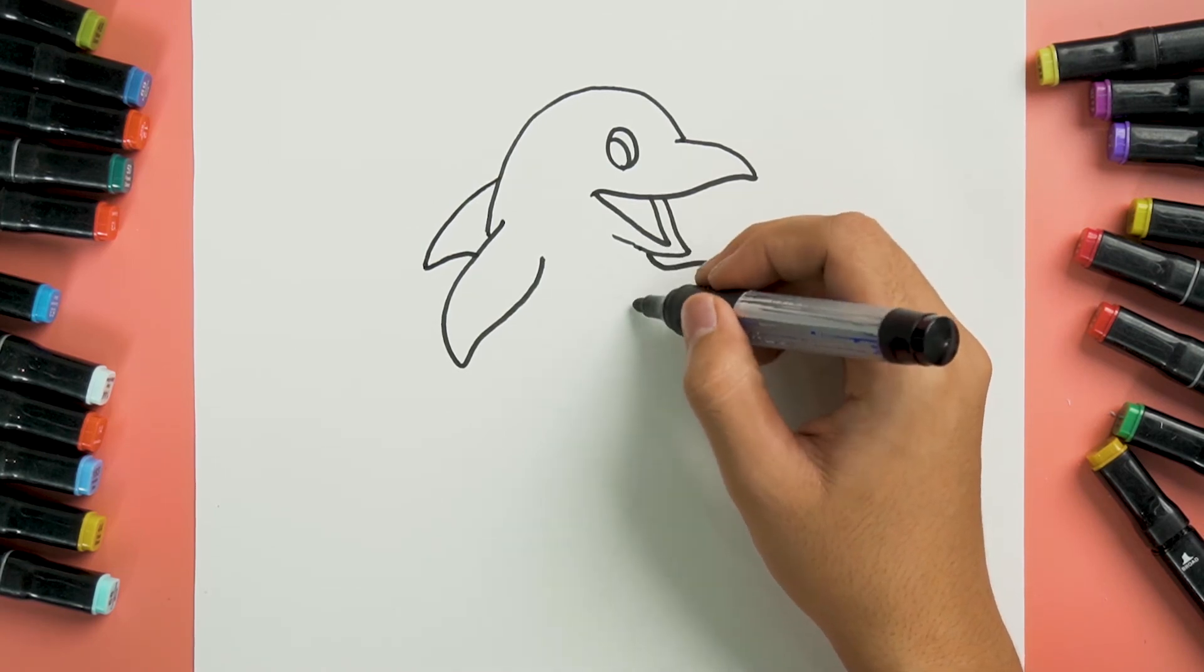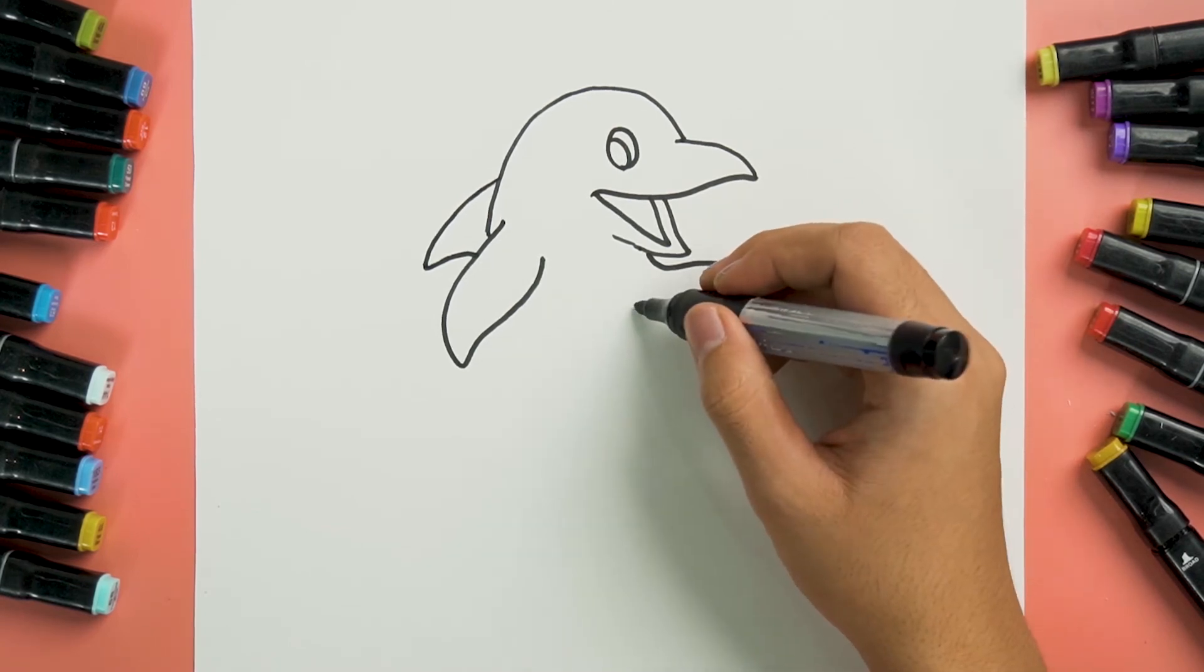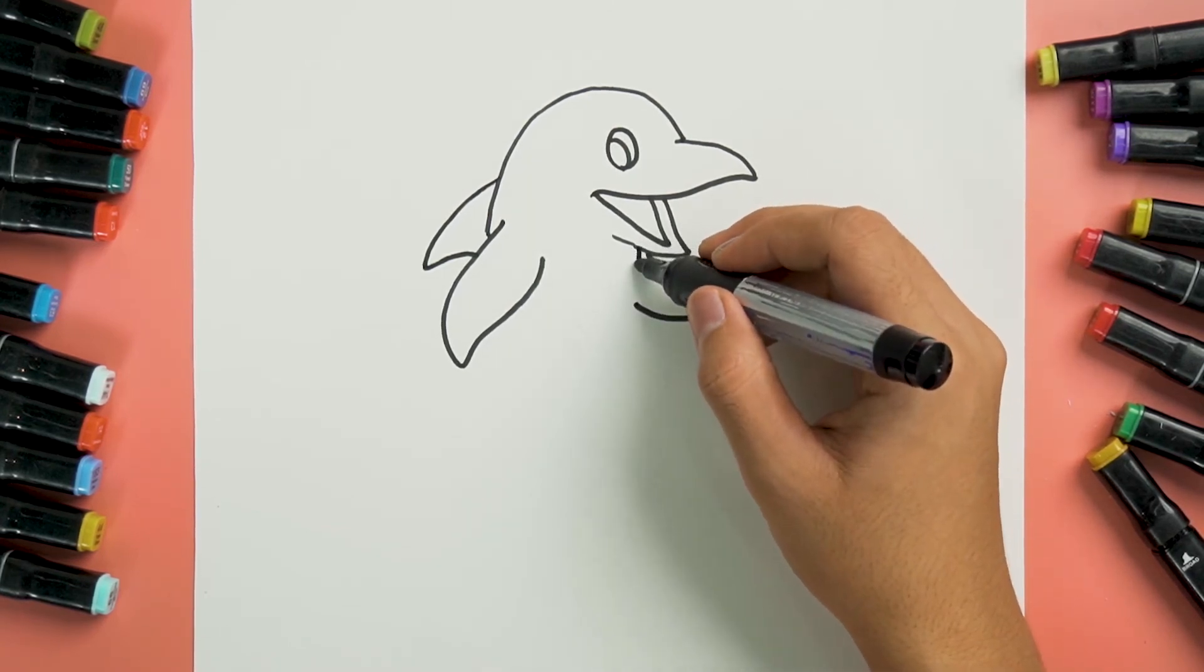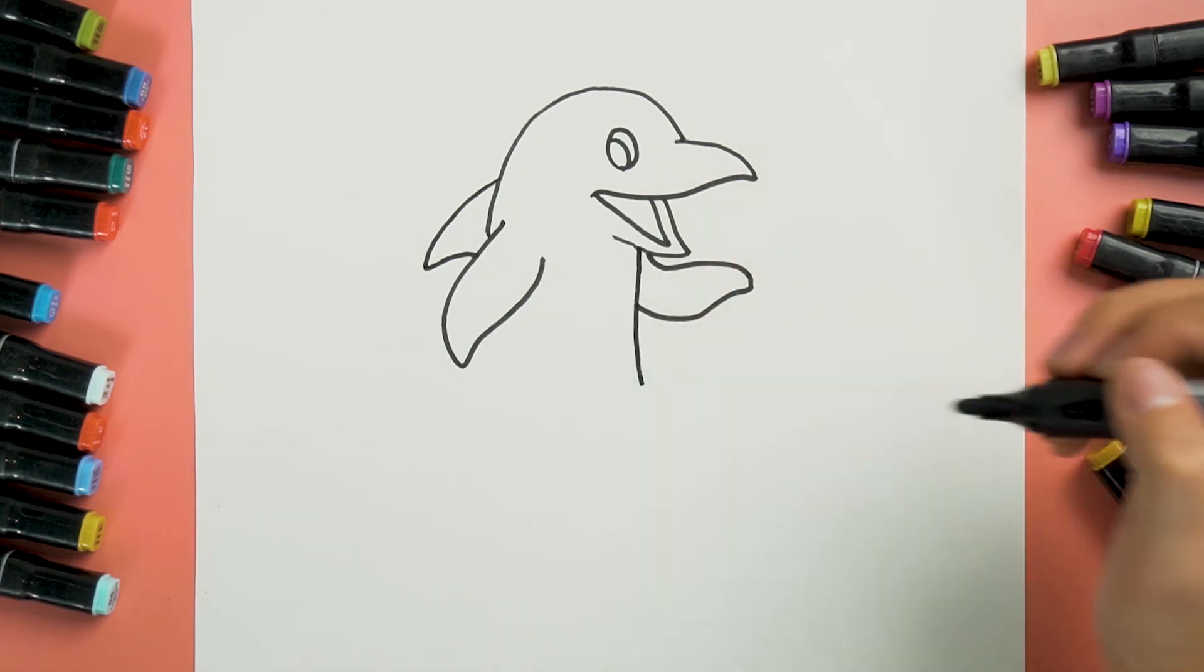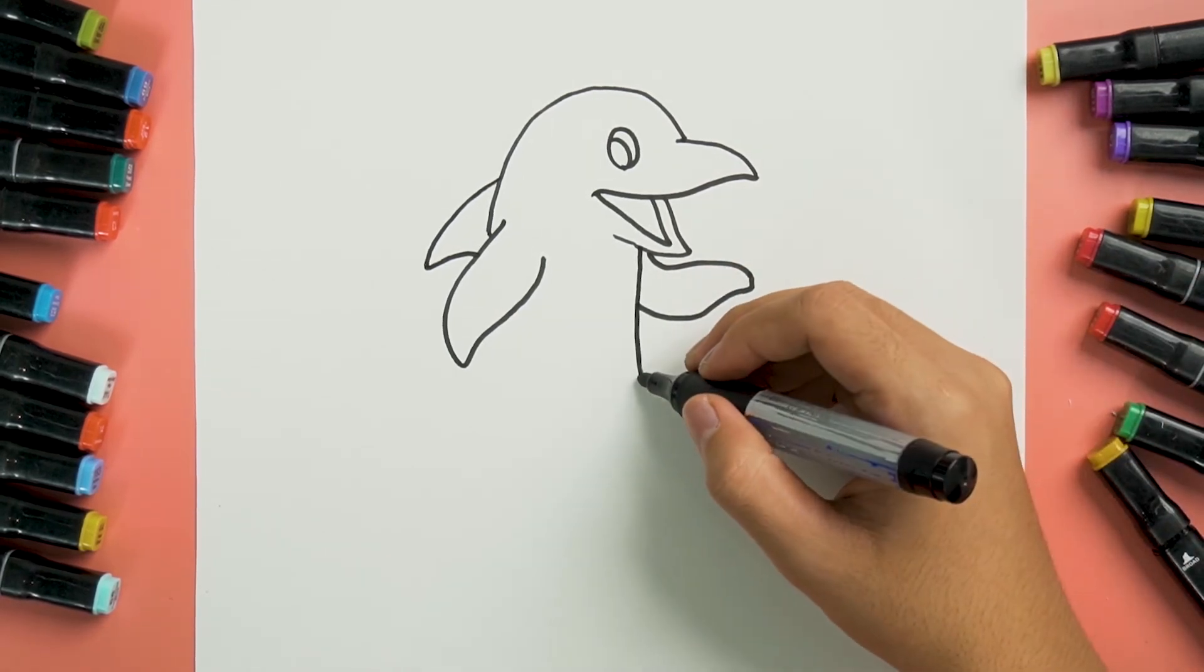Next, we will draw his body part by starting from under his mouth. Draw across the flippers to here and add a short curved line here.